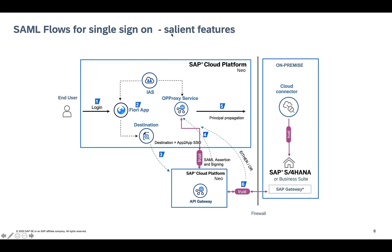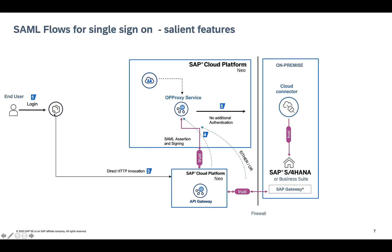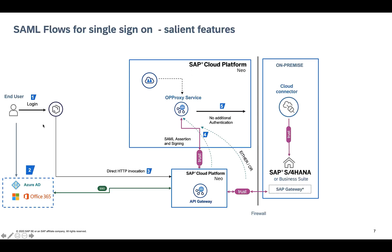Let's look at other benefits of using the SAML flow. One is you could use this to achieve single sign-on for a Fiori application. You could also use the same premise for single sign-on where your application is external to cloud platform — for example, an application running on the Microsoft stack that authenticates to Azure. You could set up on the API gateway a mechanism to validate tokens issued from Azure, break the flow down, and then generate SAML from the API management side in the capacity of an IDP-initiated SAML flow to achieve single sign-on.